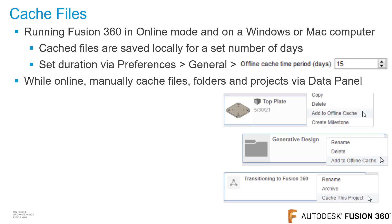When Fusion 360 is in online mode, you can manually cache design files by going into the data panel, right-clicking on a file or folder, and from the menu clicking on add to offline cache. You can also cache a project by right-clicking on its name and from the menu clicking on cache this project.